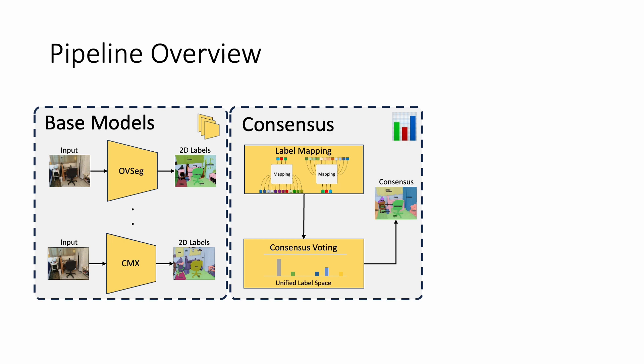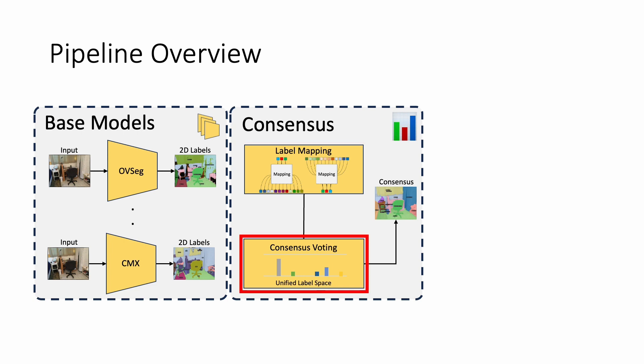The next stage is our consensus voting mechanism. Because each of the models predicts in a different set of categories, we need to map the outputs into a unified and consistent semantic label space that we carefully designed to avoid ambiguities. Thus, we have for each prediction space a label mapping to every other space that can be used to easily navigate from one space to another. After mapping the 2D predictions, the voting mechanism looks at all individual predictions and votes for the maximum class if the number of consistent votes is above a threshold.